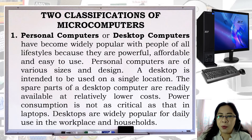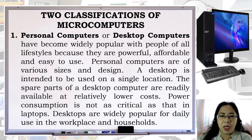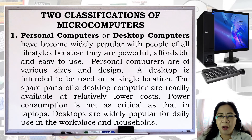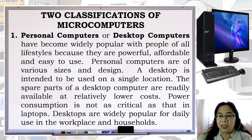A personal computer or desktop computer has three major components: the monitor, the keyboard, and the system unit — which is commonly but incorrectly called the CPU. The CPU is one of the important components inside the system unit. The system unit is the whole box wherein you connect all other parts of a computer system and other peripherals.